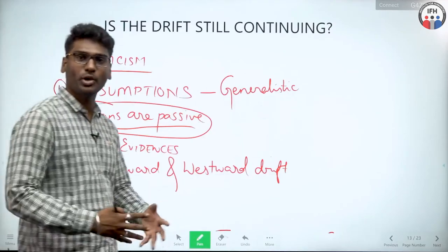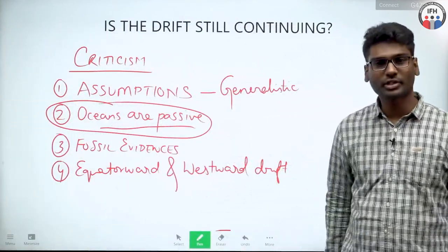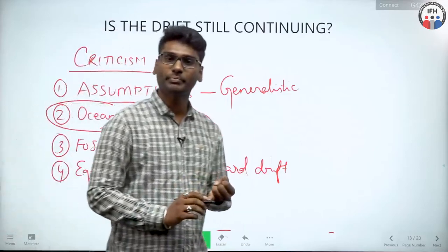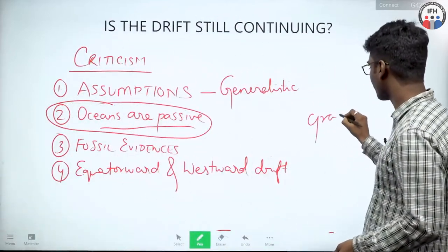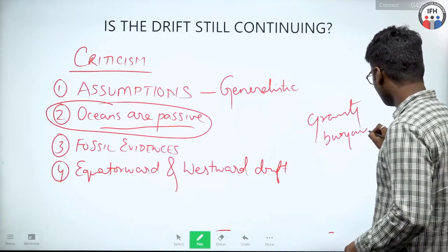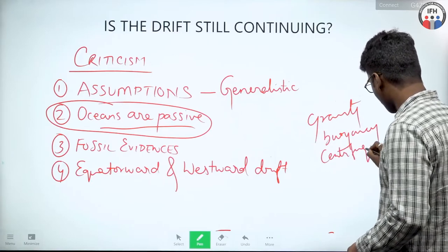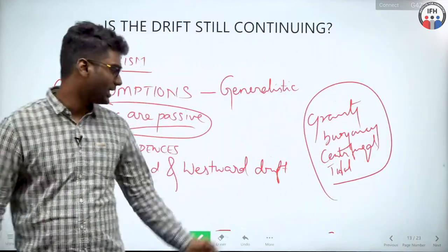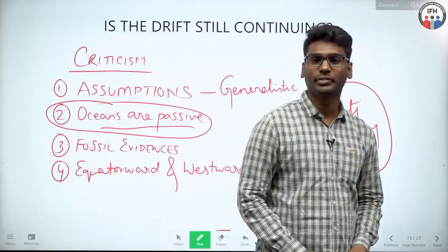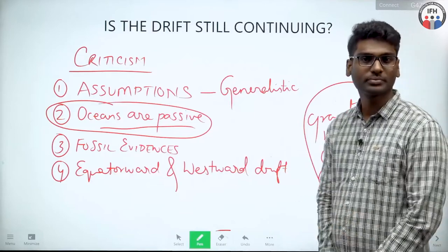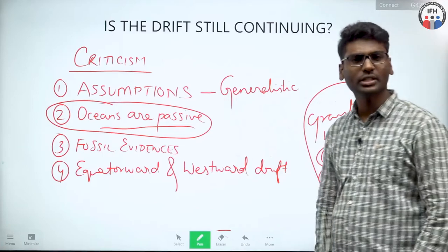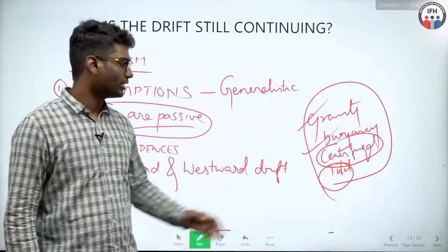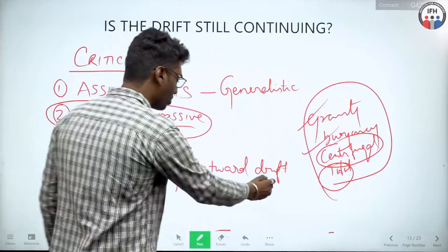Third criticism: regarding fossil evidences. Glossopteris, which he proposed was present in the Gondwana land mass, was later found in Iran, Afghanistan, and Siberia — all part of Laurasia. There was no explanation for that. Fourth criticism, very important: he said gravity, buoyancy, centrifugal force, and tidal force were the reasons behind equatorward and westward drift — but do you think a tide can push a continent? Or centrifugal force can push a continent? These forces do not have that much capability to push continents, so this was another grave mistake.